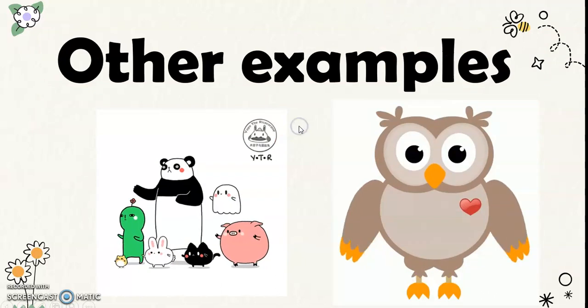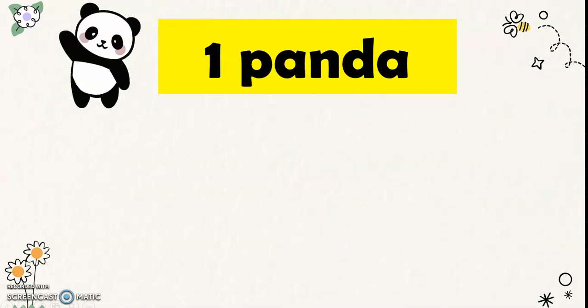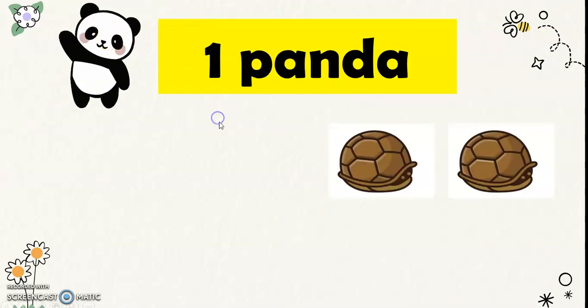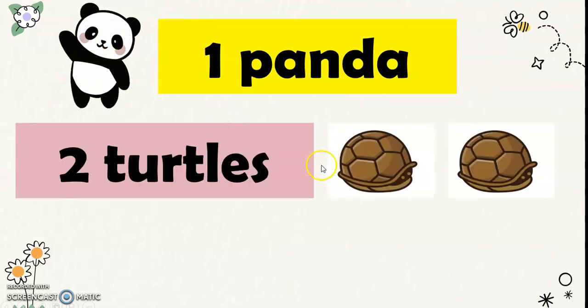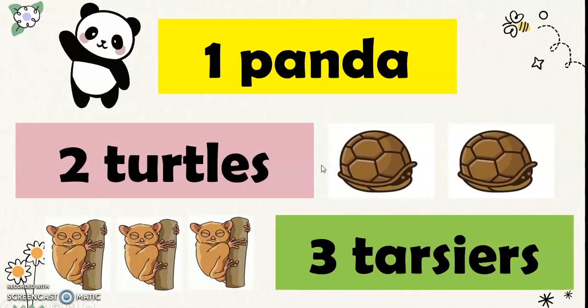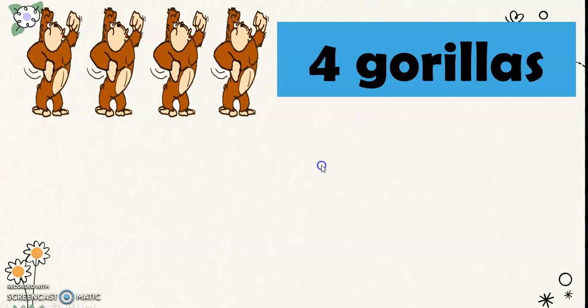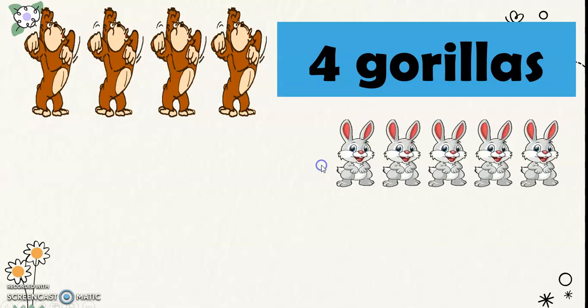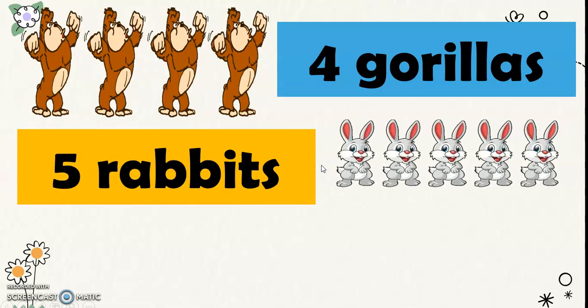Now, I would like to give other examples for you. This is 1 panda. These are 2 turtles. These are 3 tarsiers. These are 4 gorillas. These are 5 rabbits.